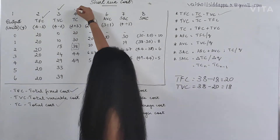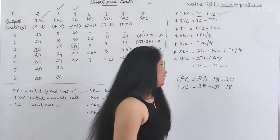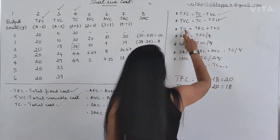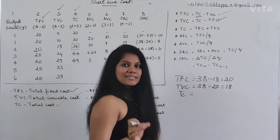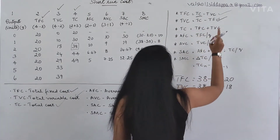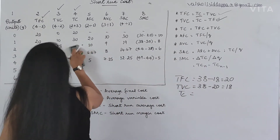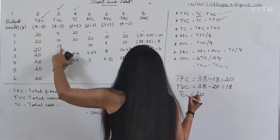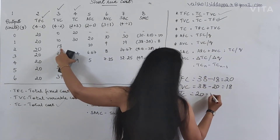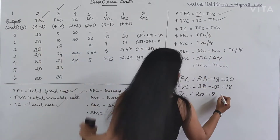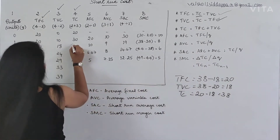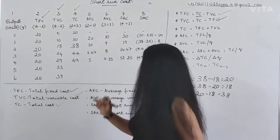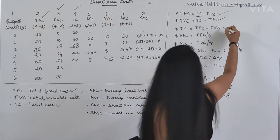The next one is TC - Total Cost. The easiest way to find out TC is TFC plus TVC. To find out the total cost, you have to add the fixed cost and the variable cost. TFC is 20 plus TVC is 18. The total is 38. So the answer is 38. We are done with 3 formulas.